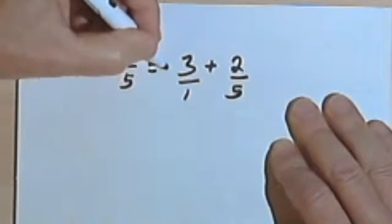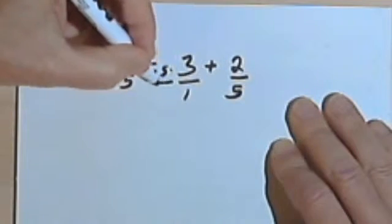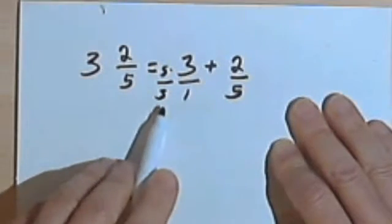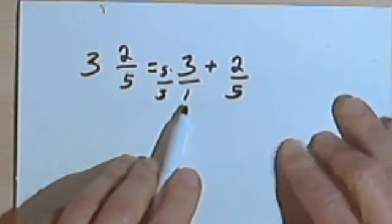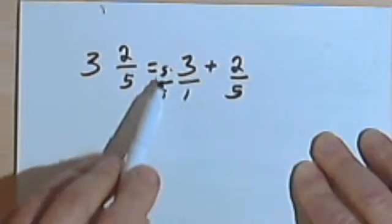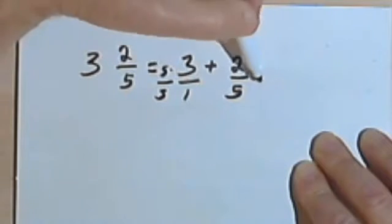So let's multiply this first fraction, the 3 over 1, by the fraction 5 over 5. In other words, if I multiply the denominator by 5, it will become a 5. So multiplying 5 times 3 is 15.